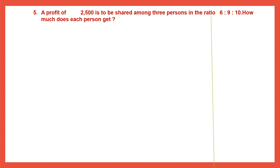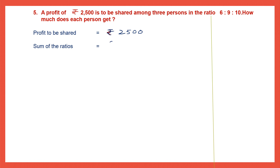Question 5. A profit of 2,500 rupees is to be shared among three persons in the ratio 6 is to 9 is to 10. How much does each person get? The profit to be shared is 2,500 rupees. Sum of the ratios: 6 plus 9 plus 10 — 6 plus 9 is 15, and 15 plus 10 is 25.